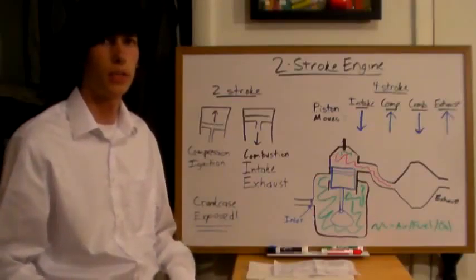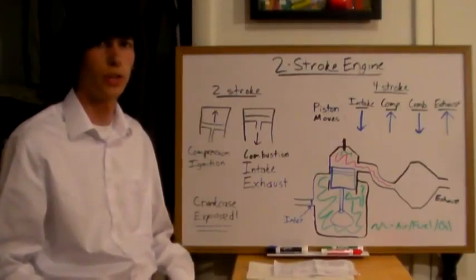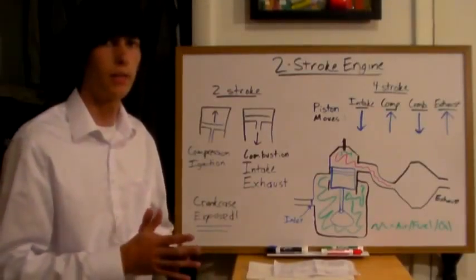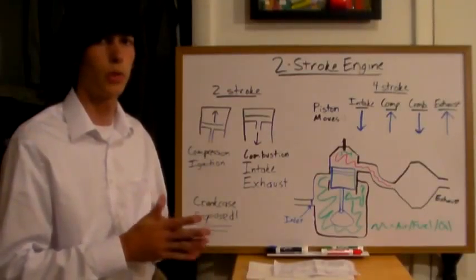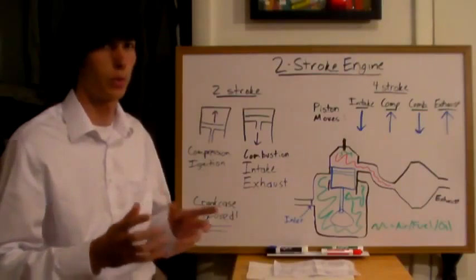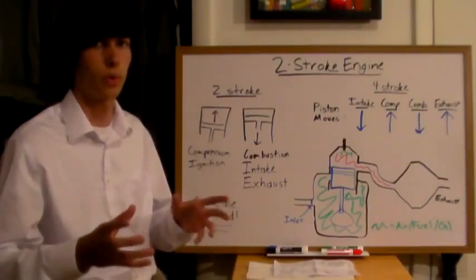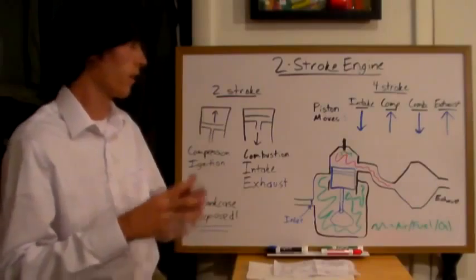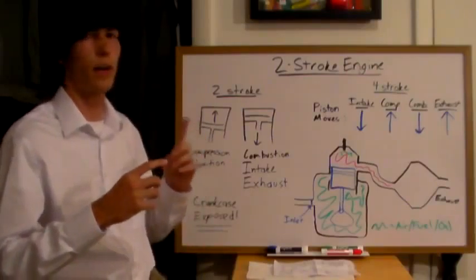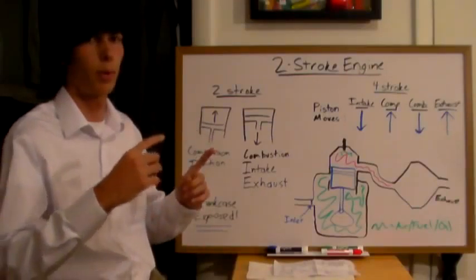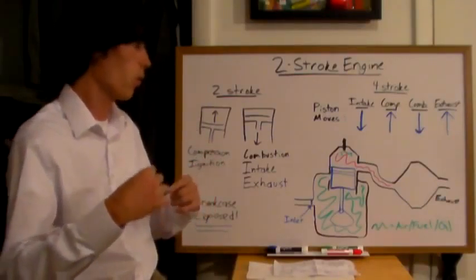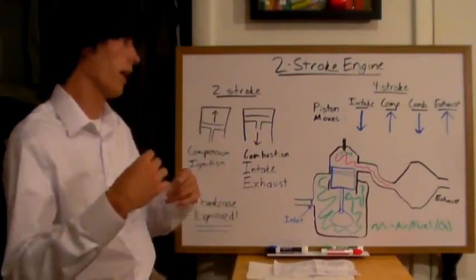In this video I'll be explaining a two-stroke engine. The main difference between a two-stroke engine and a four-stroke engine — which we typically have in our cars — is that the two-stroke engine will fire once per rotation of the crankshaft, whereas a four-stroke engine will fire once for every other rotation of the crankshaft.